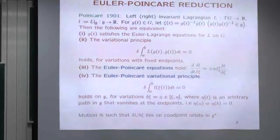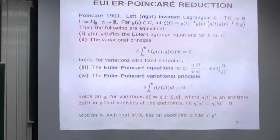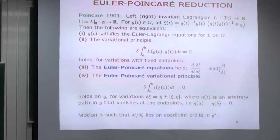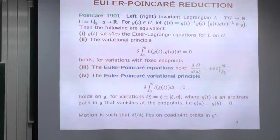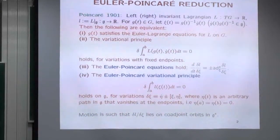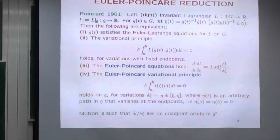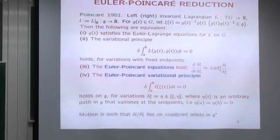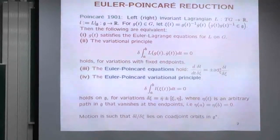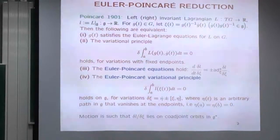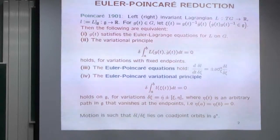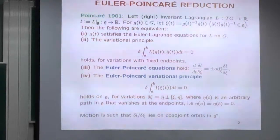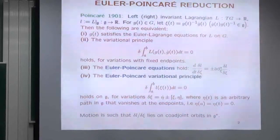He says the following four things are equivalent. G(t) satisfies the Euler-Lagrange equations for L on G; the variational principle of Hamilton holds — nothing new there. But now comes Poincaré: the so-called Euler-Poincaré equations hold, d/dt (∂L/∂ξ) = ±L*_ξ (∂L/∂ξ), where plus is for left and minus is for right. And ∂L/∂ξ in physicist notation is just a Fréchet derivative of L, so this is an element in G*.